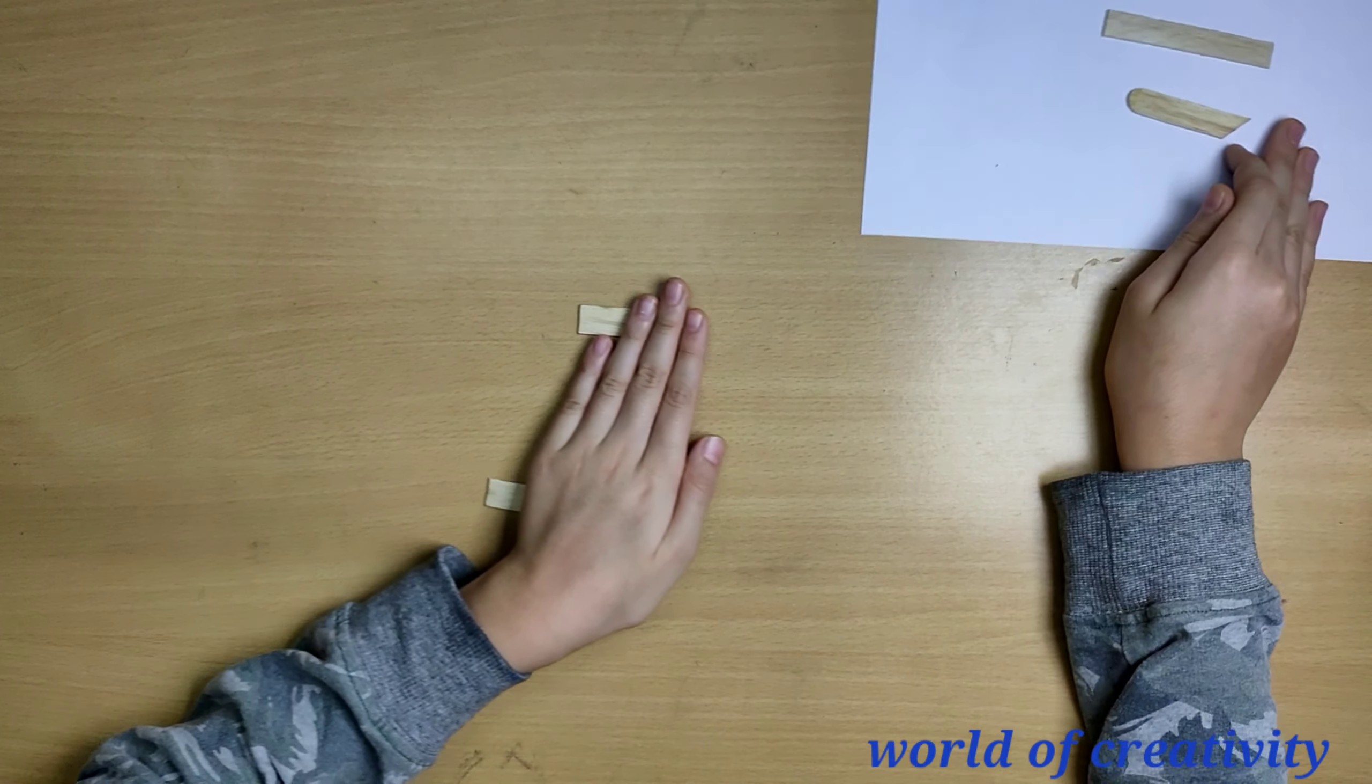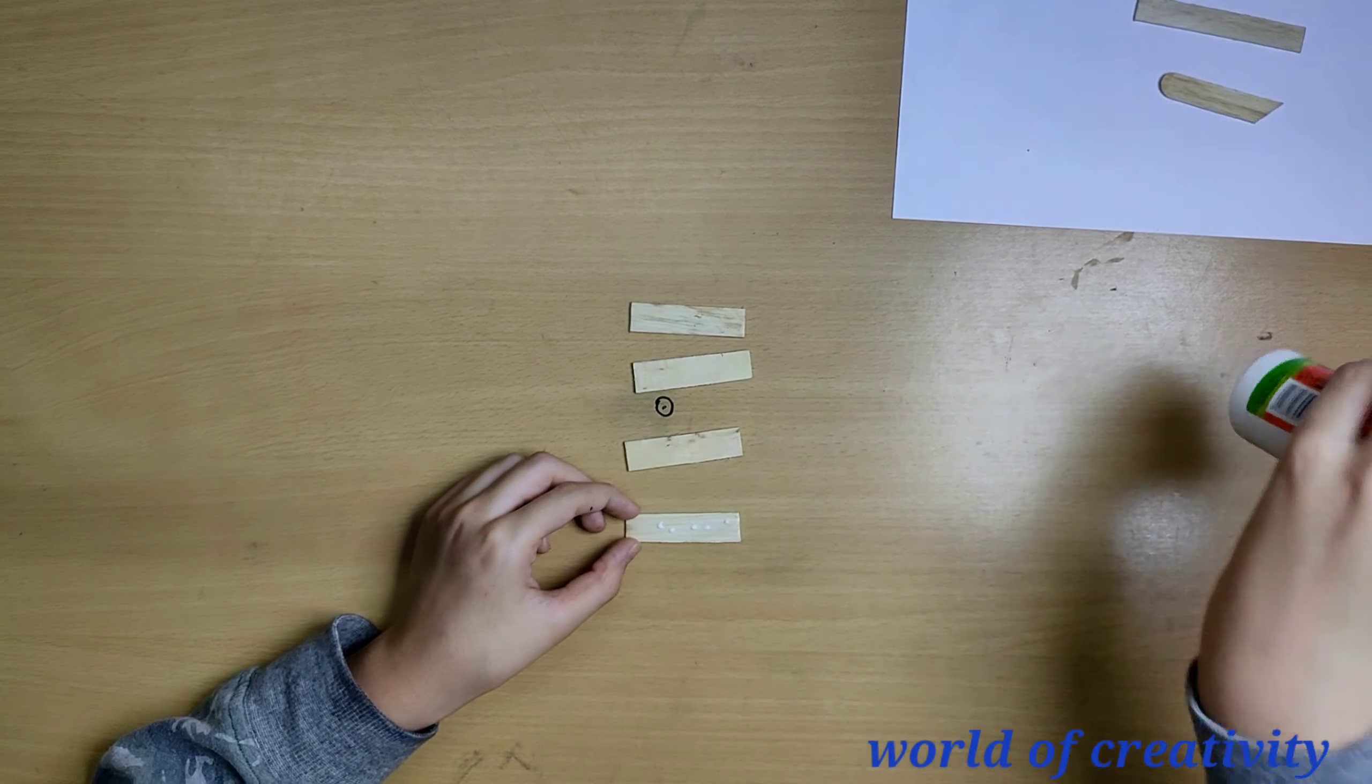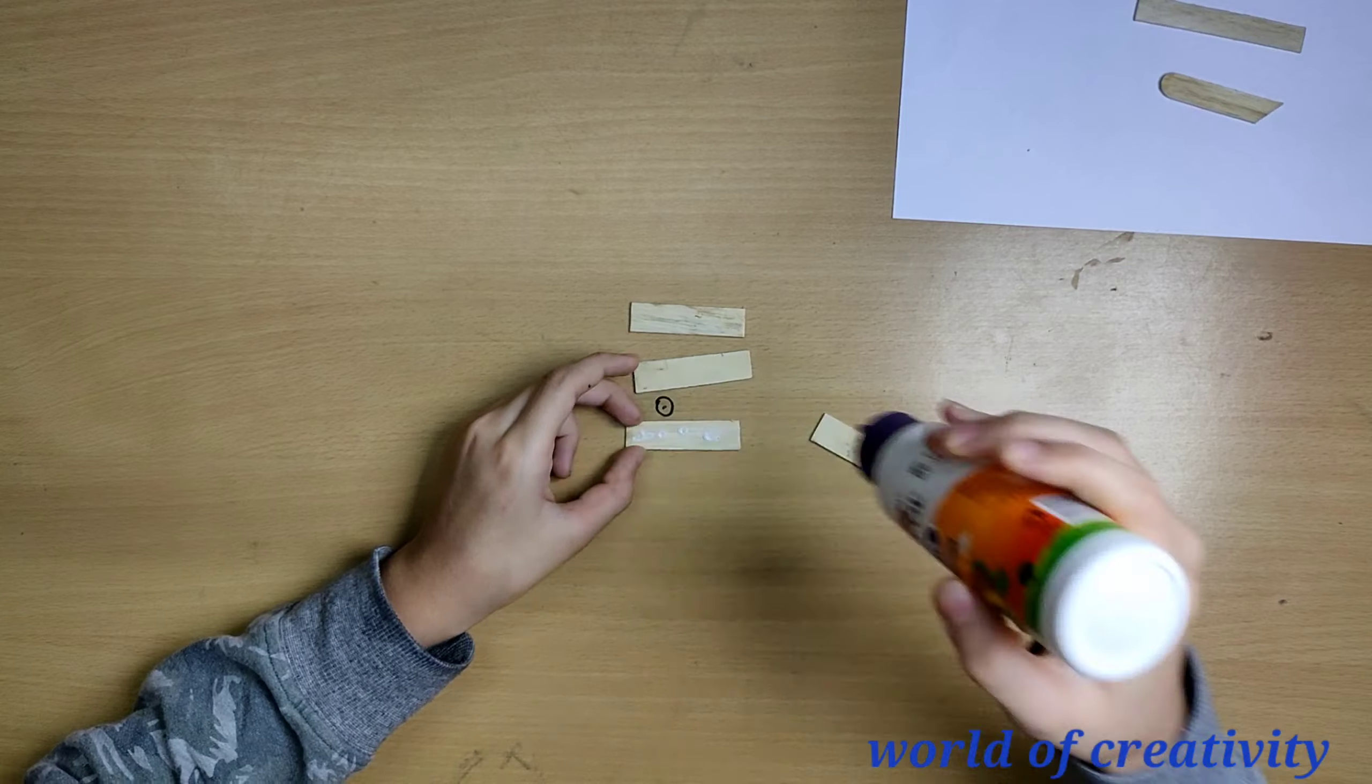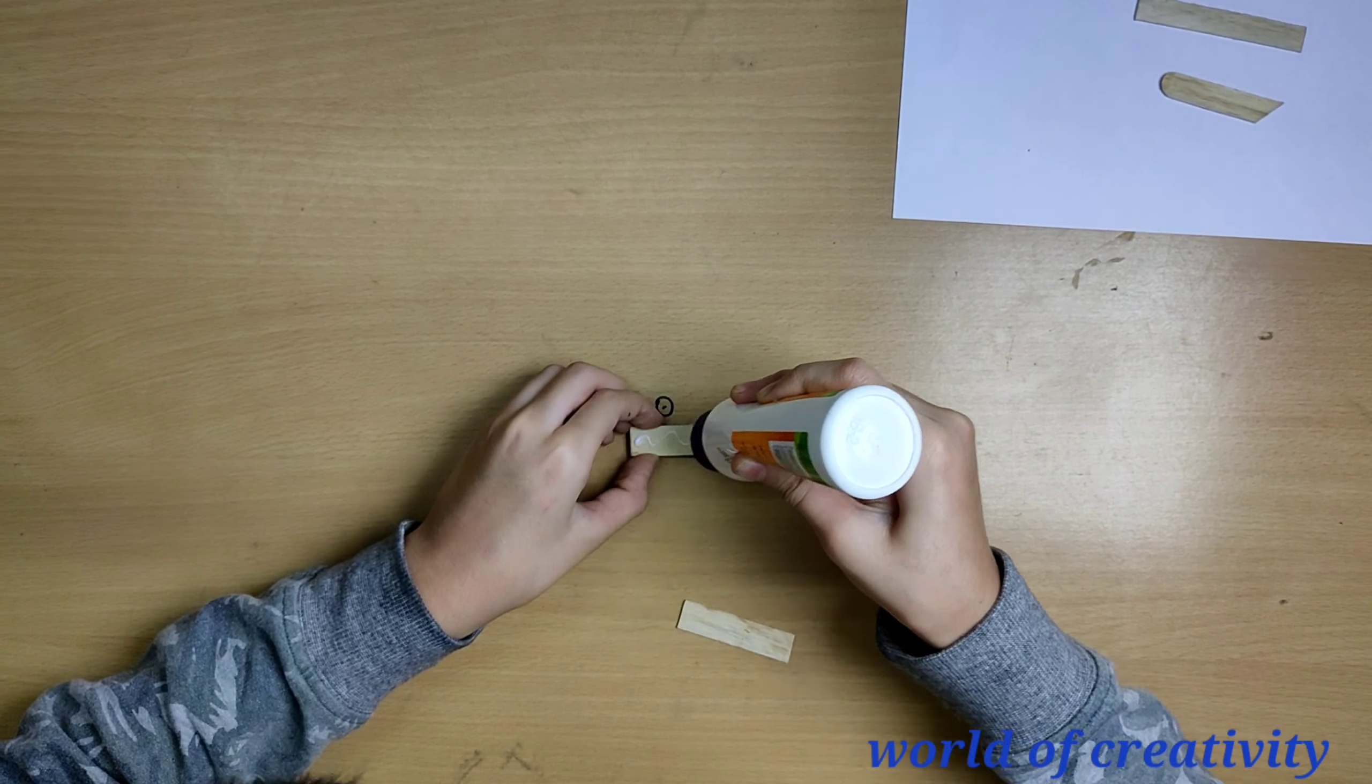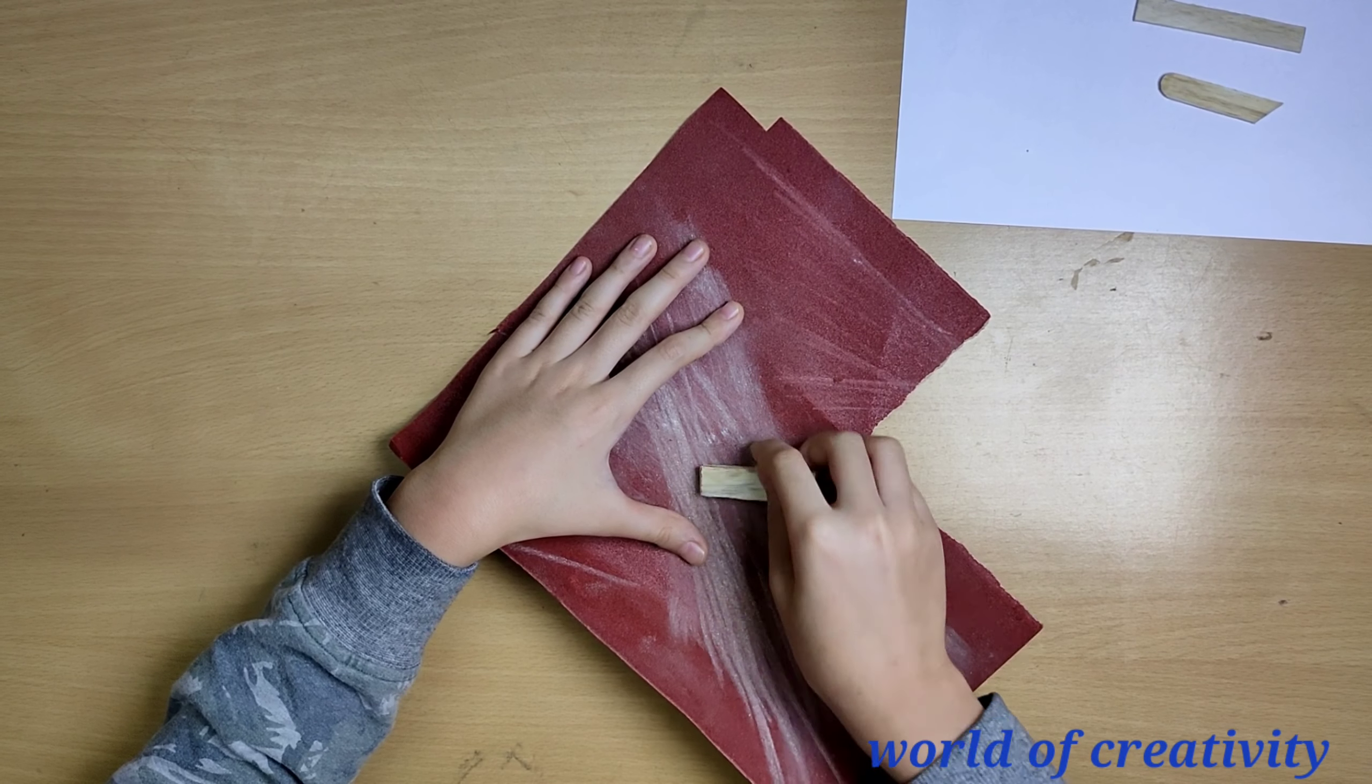We will take the first four and apply glue and stick it all together. And then tie it with a rubber band. Now we will sand it with some sandpaper.